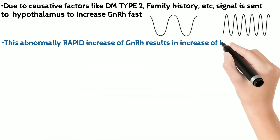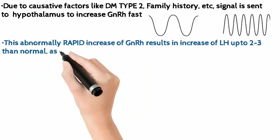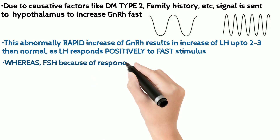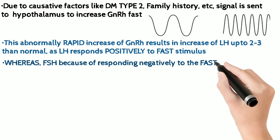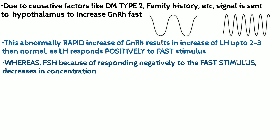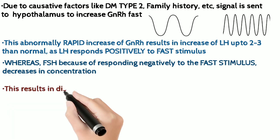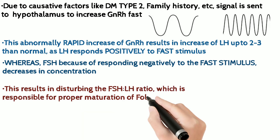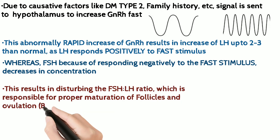...the level of LH secretion rises up to 3 times, whereas FSH secretion remains the same or even drops in some cases. This results in distorting the normal FSH to LH ratio, which is responsible for maturation of the follicles.